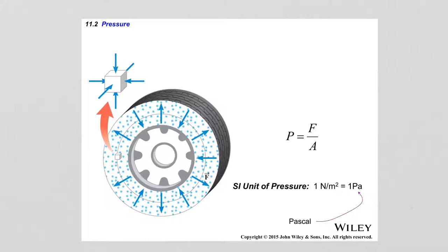In terms of the pressure of a fluid — for example, the pressure of air inside a tire — the force is applied everywhere uniformly inside the tire. The blue arrows indicate the direction of the pressure due to the molecules of the air inside colliding with the walls of the tire. So the pressure is equal everywhere under normal conditions. If I look at a small cube element, the forces applied to the walls from the gas molecules will be equal from all directions. There is no preferred direction.